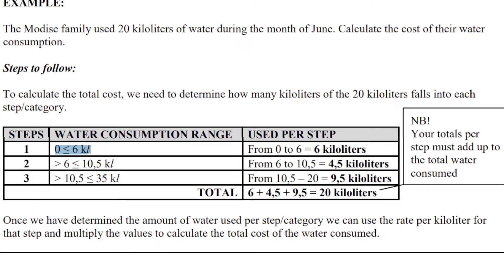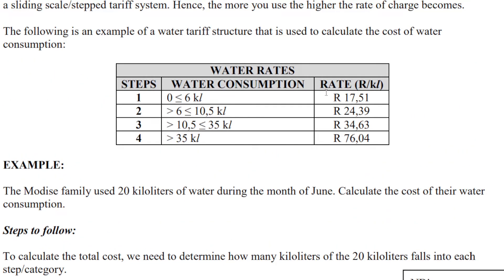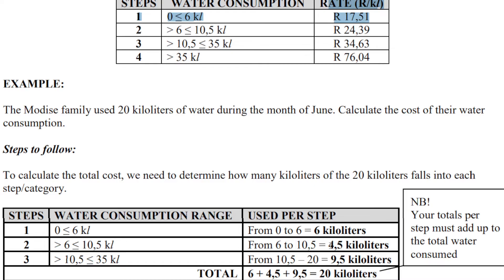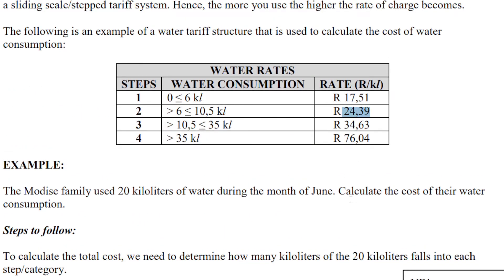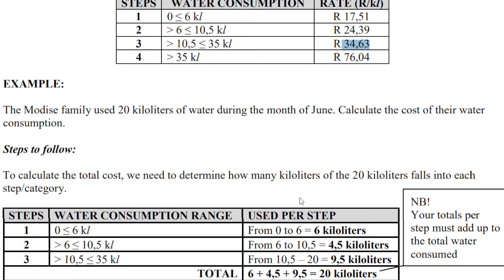The first six kilolitres fall into the first category, charged at that rate. That leaves 14 kilolitres. This next section deals with 4.5 kilolitres — so we've used 6 plus 4.5, which is 10.5 so far. Subtracting 10.5 from 20 leaves 9.5, which falls into the third category. So it'll be 6 multiplied by the first rate, 4.5 multiplied by the second rate, and 9.5 multiplied by the third rate.